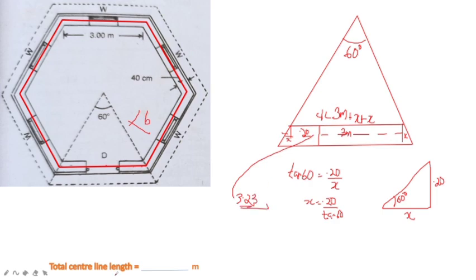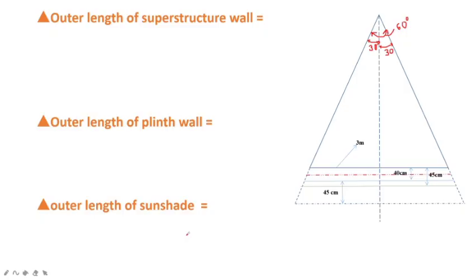x is equal to 0.115. The total center-line length is equal to 19.38 m. Now, if you want to use the outer length of the superstructure wall — which is the 40 cm thickness wall — the outer length is an additional distance. So if we put the center line, that is the outer length of the plinth wall, which is an additional variable distance.